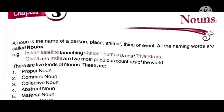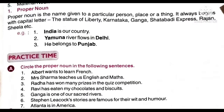There are five kinds of noun: proper noun, common noun, collective noun, abstract noun and material noun. See here the first type — proper noun. Proper noun is the name given to a particular person, place or thing.